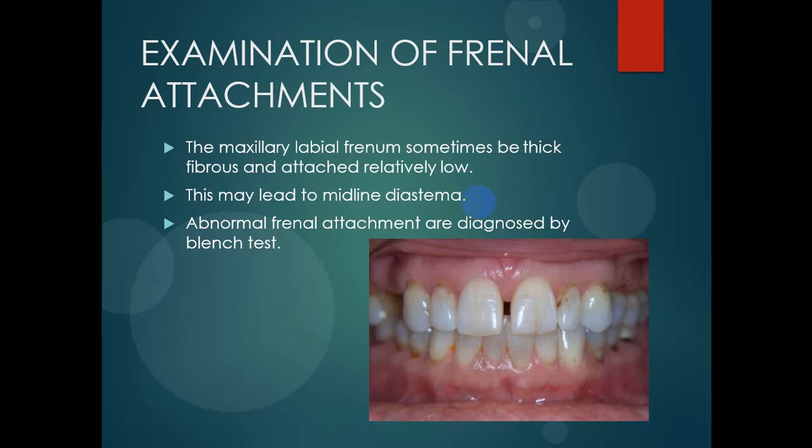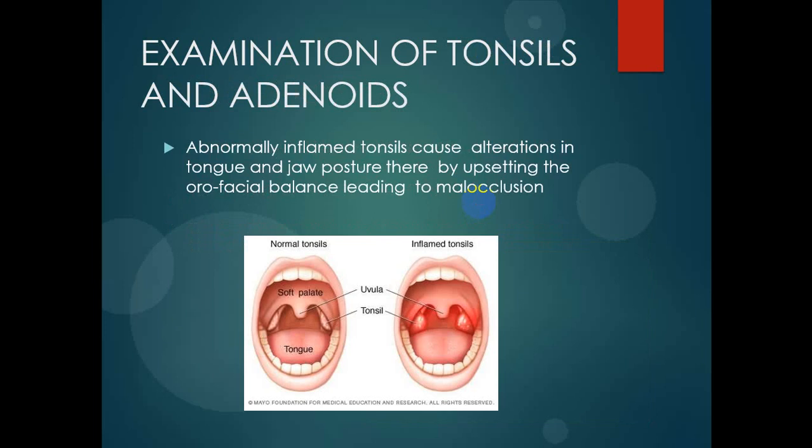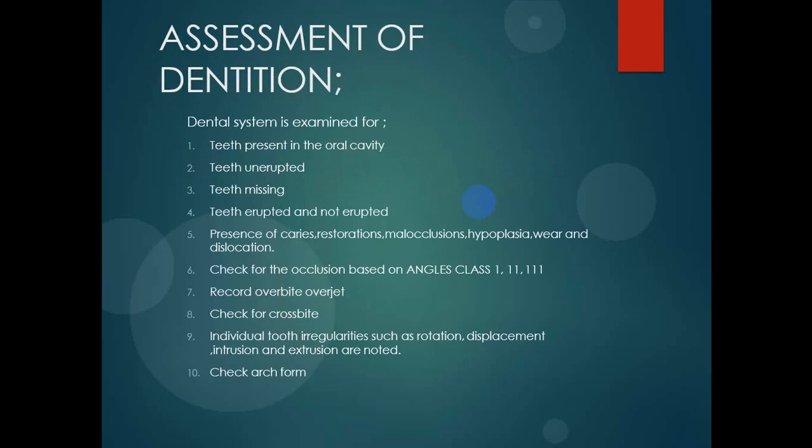Examination of tonsils and adenoids: abnormally inflamed tonsils cause alteration in the tongue and jaw posture, thereby upsetting the orofacial balance, leading to malocclusion. If tonsil inflammation occurs, it has an effect on the tongue, which disturbs the muscles, and when the muscle equilibrium is disturbed, it causes malocclusion.